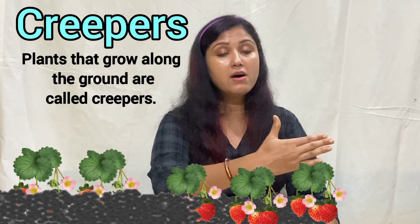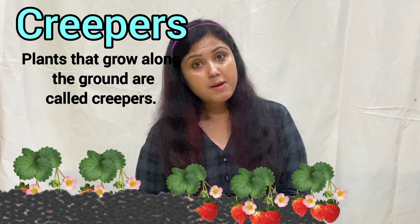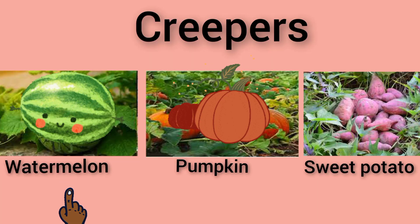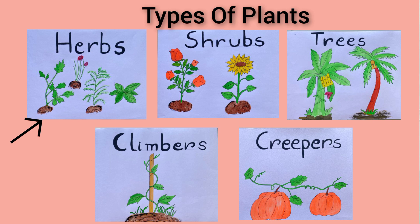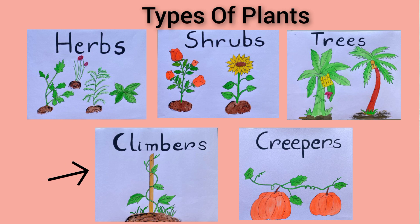The next type is creepers — C-R-E-E-P-E-R-S. Plants that grow along the ground are called creepers. Examples include watermelon, pumpkin, and sweet potato. So children, there are mainly five types of plants: herbs, shrubs, trees, climbers, and creepers. You have to learn all the names with examples.